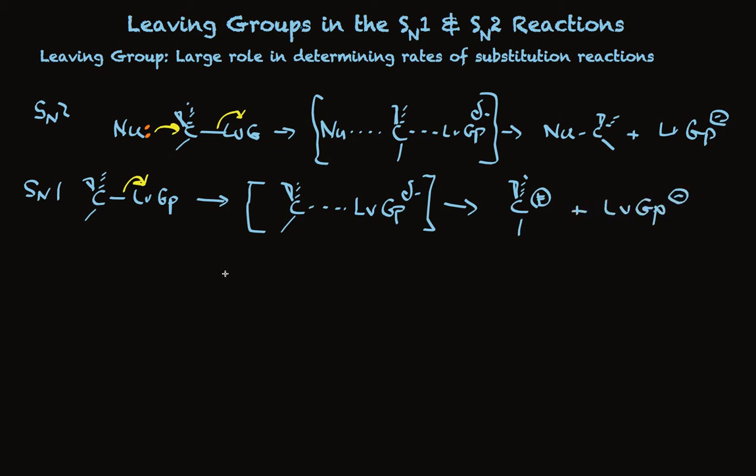So in both cases, the transition state of the rate determining step has a bond that is partially broken. And in both cases, the leaving group already has acquired negative charge. So when you think about what aspects of the leaving group would affect the rate of the reaction, as we look at the transition state structure in the rate determining step, it's easy to conclude there should be two things.